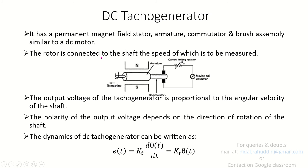The rotor is connected to the shaft for which the speed is to be measured. The armature is connected to the machine whose speed is to be determined. The commutator and brush assembly is used along with a moving coil voltmeter circuit to measure the output voltage. The output voltage of the Tachogenerator is proportional to the angular velocity of the shaft, and the polarity of the output voltage depends on the direction of rotation.